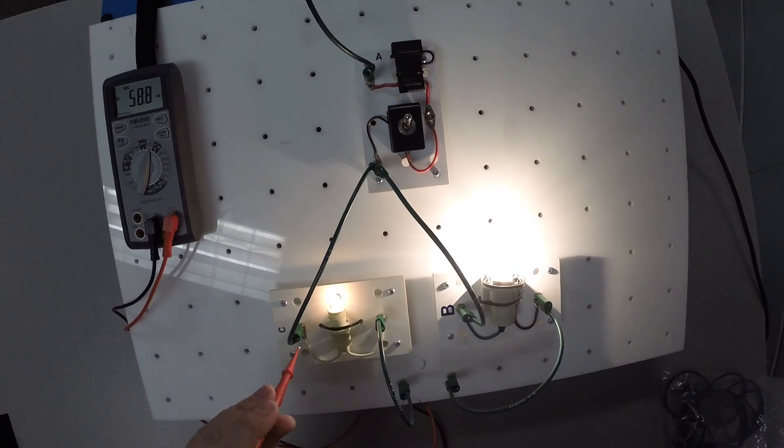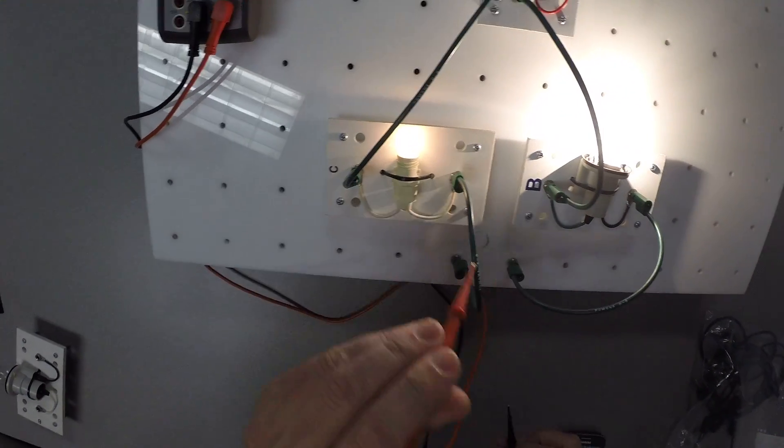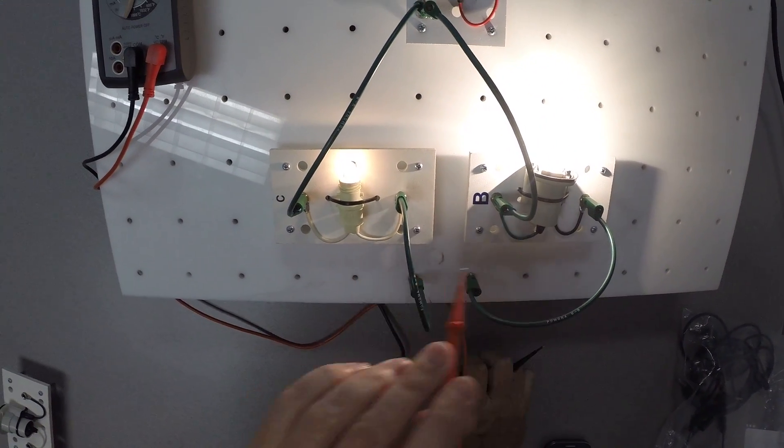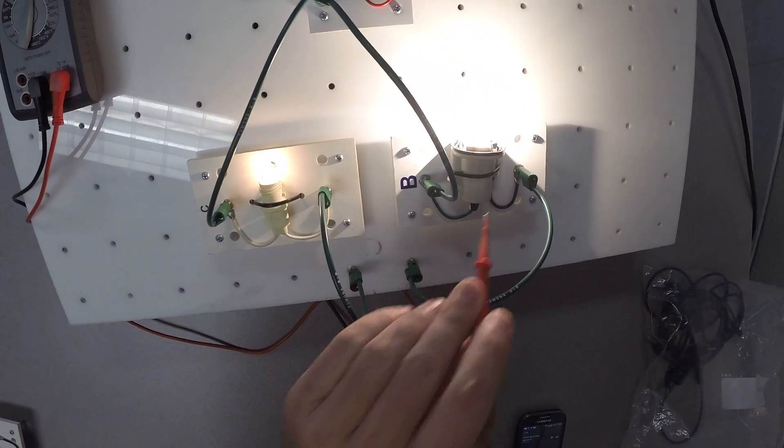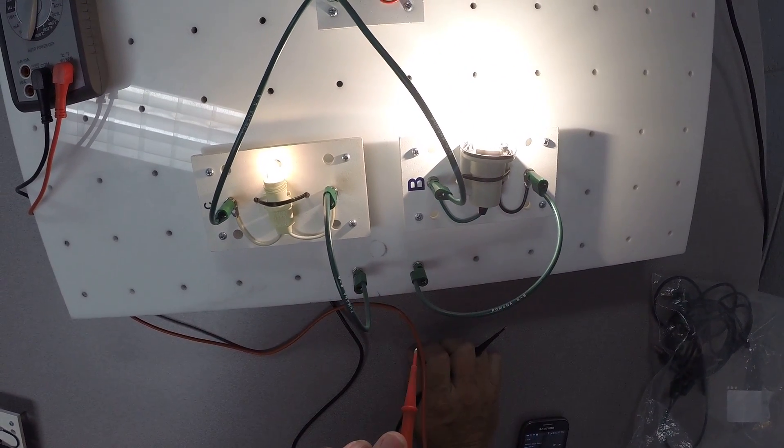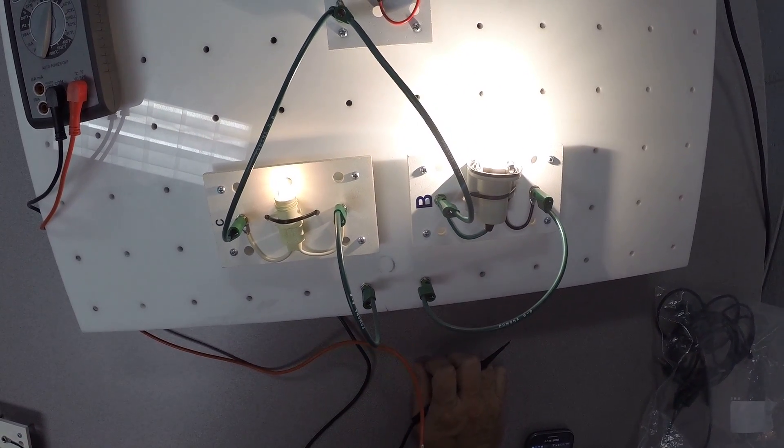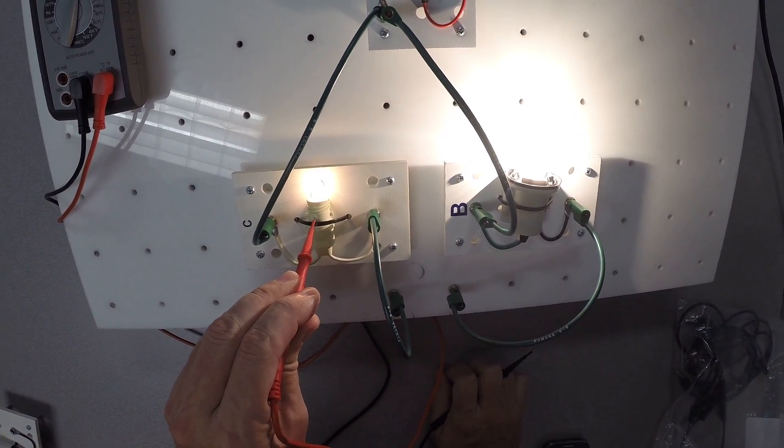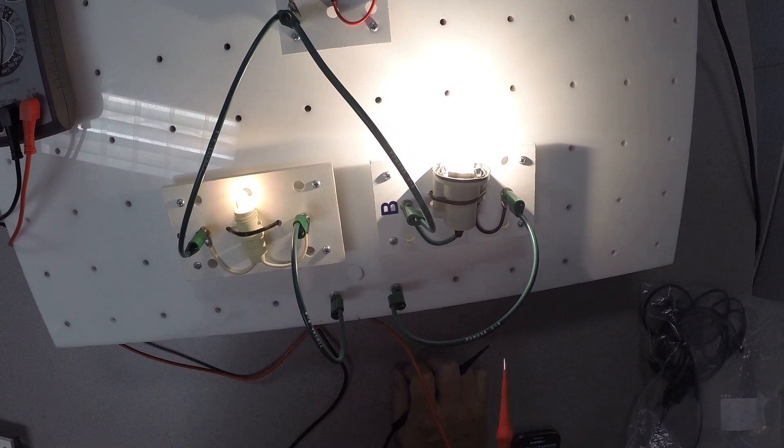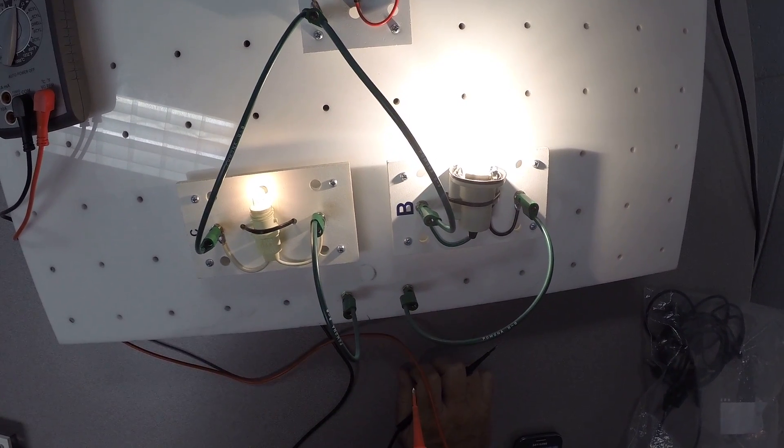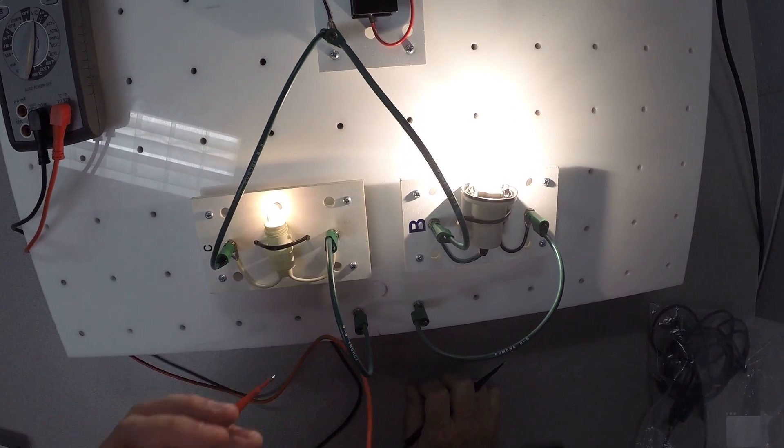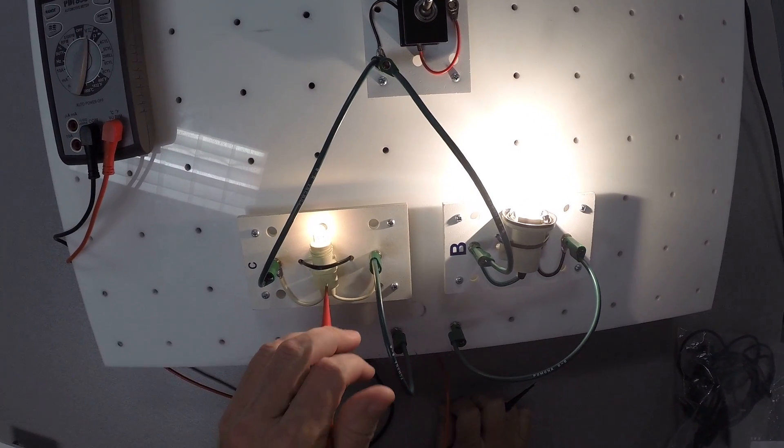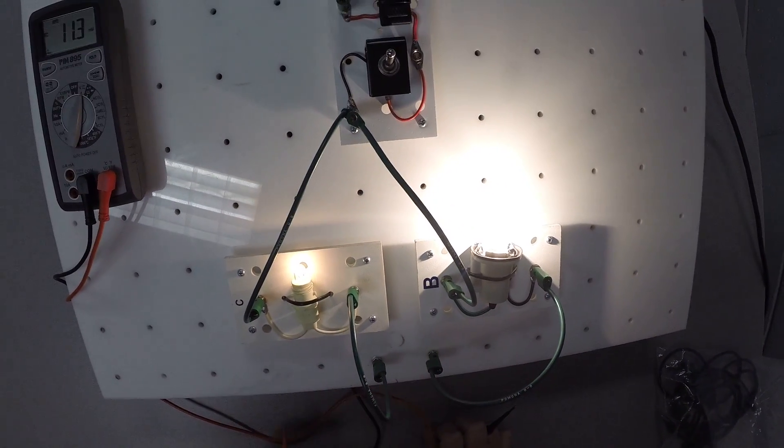So we have 12 volts available here, and we have 12 volts available here. So that means this bulb gets to drop 12 volts, and this bulb gets to drop 12 volts. If these bulbs were hooked in series, that wouldn't be the case. One bulb would drop a portion of the voltage, and the other bulb would drop a portion of the voltage. And how much voltage each bulb used up would depend on the resistance of that bulb.